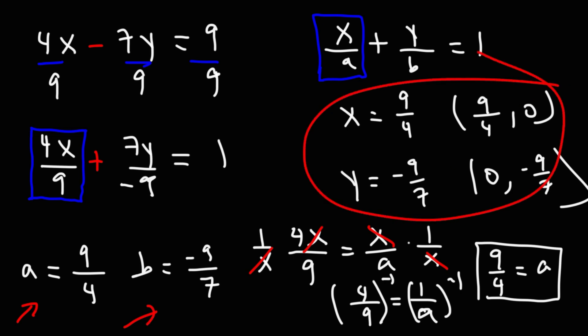Therefore, these are the x and y-intercepts. So that's how you can find the x and y-intercepts using the intercept form of a linear equation.